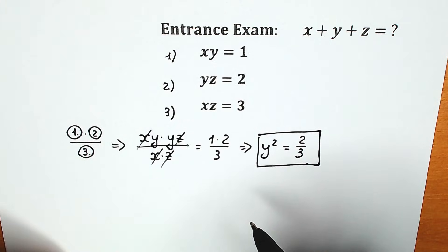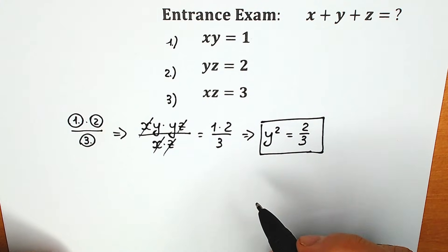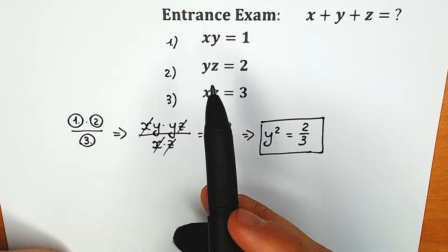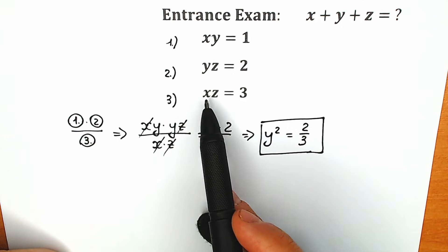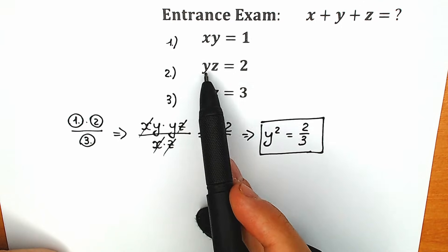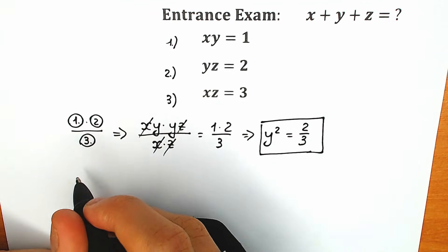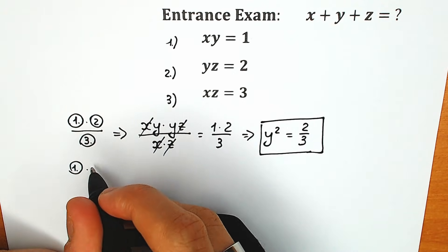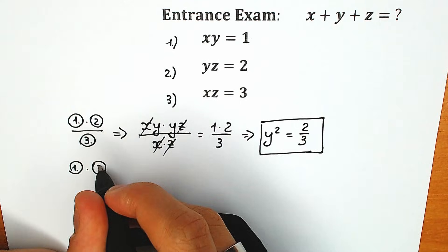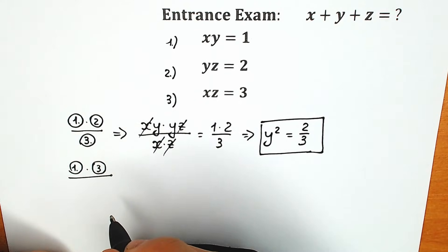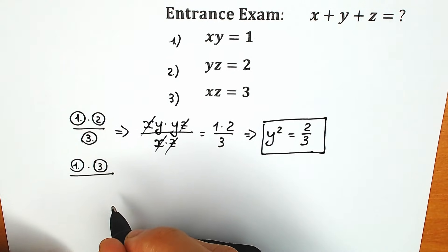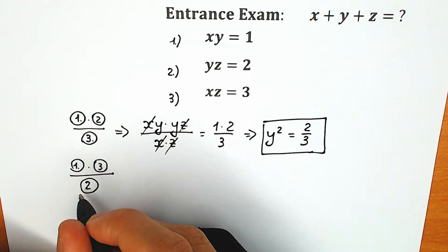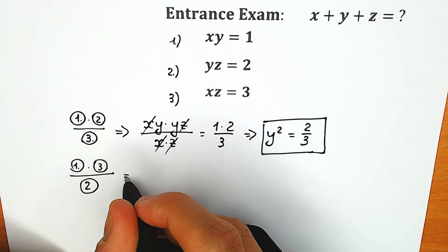As a second step, let's consider our second combination. Let's multiply our first equation times the third one, and divide by the second one. Let's try to solve this combination.